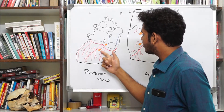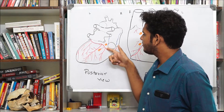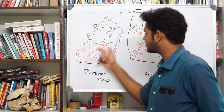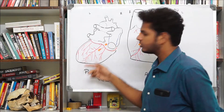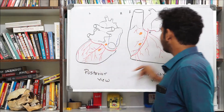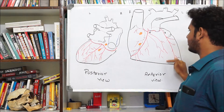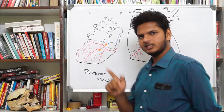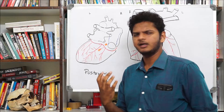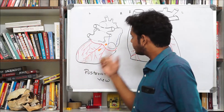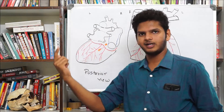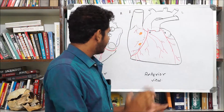Before anastomosing, the right coronary artery gives off a major branch — the posterior interventricular artery — running between the two ventricles posteriorly. In 90% of people, this artery is a branch of the right coronary artery (right dominant heart). In 10% of people, it arises from the left coronary artery, making it a left dominant heart.